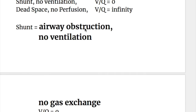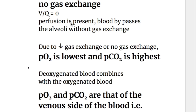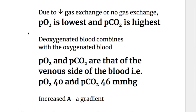In shunt, there is airway obstruction, no ventilation, and no gas exchange, so V/Q ratio goes to zero. Perfusion is present but blood bypasses the alveoli without gas exchange. Due to decreased or absent gas exchange, PO2 is lowest and PCO2 is highest. The deoxygenated blood combines with the oxygenated blood.